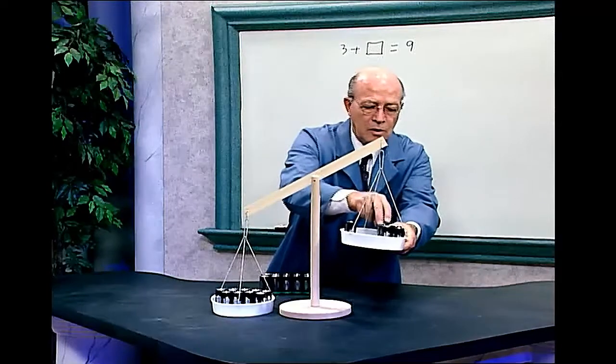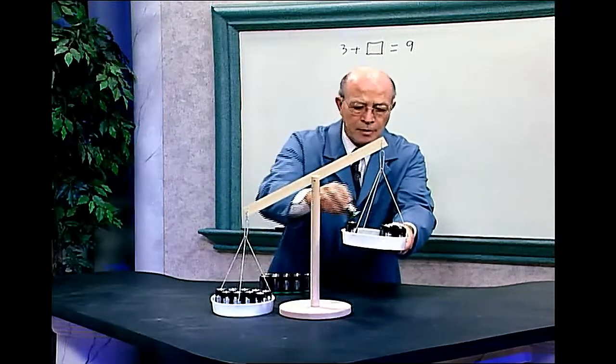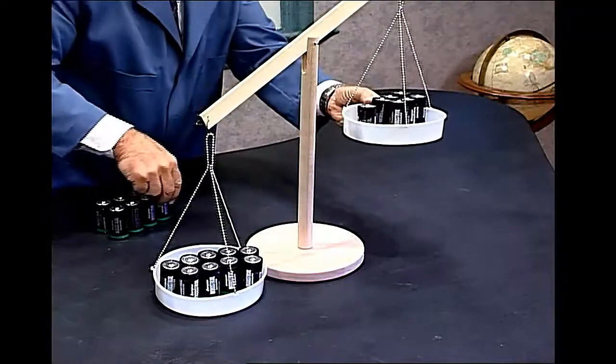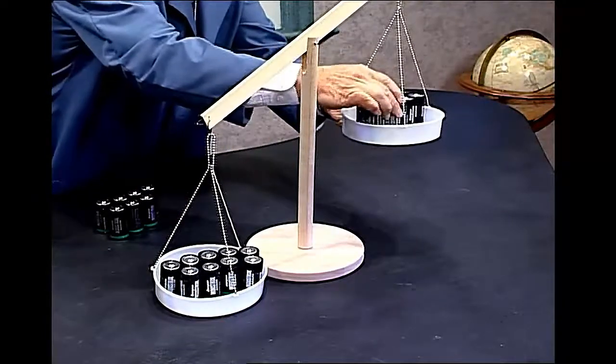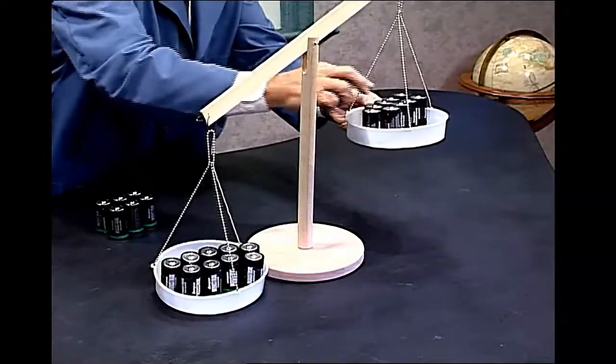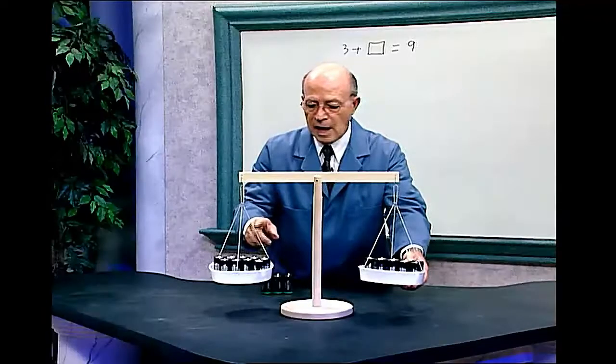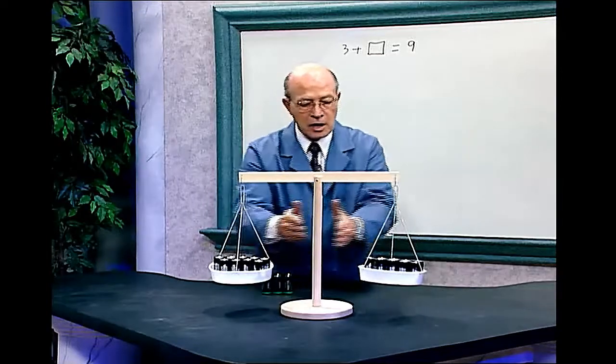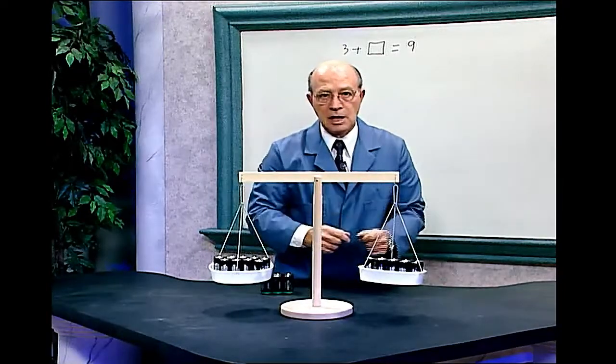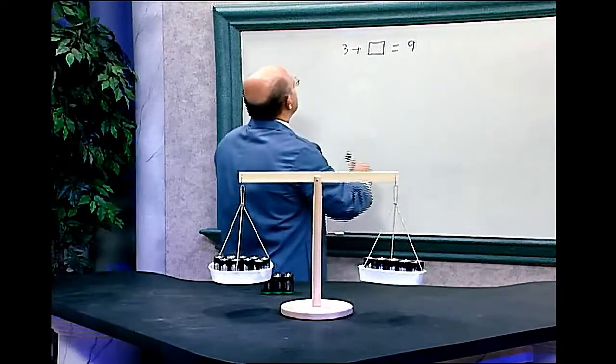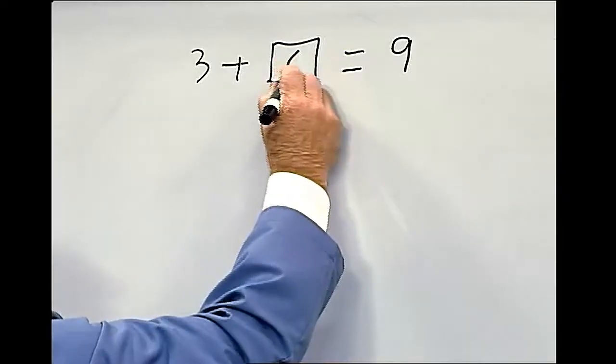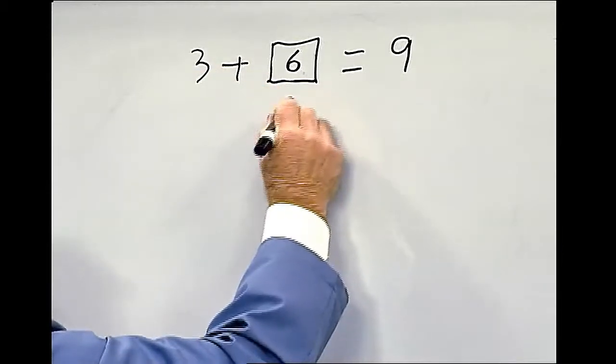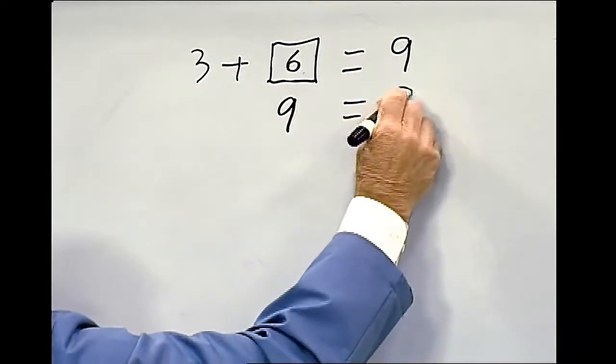1, 2, 3, 4, 5, 6. As you can see, to balance the scale with 9 on this side, 3 over here, I need to add 6. 3 plus 6, so 3 plus 6 equals 9. Let's do the math. 3 plus 6 is 9 equals 9.